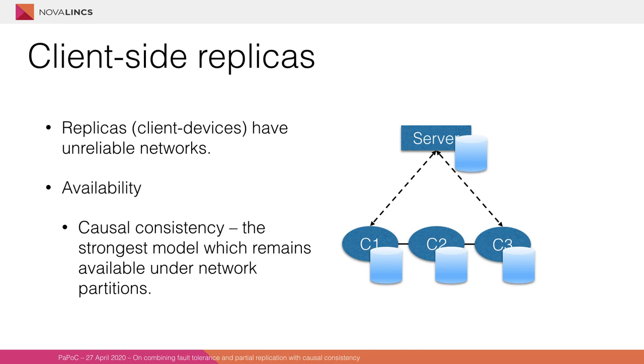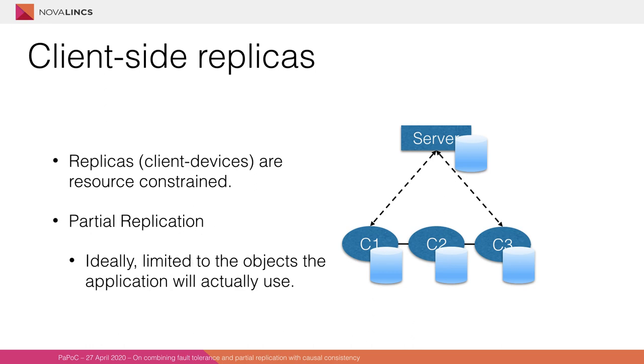One thing we have to address in such a deployment is that client devices have very unreliable networks. This has an impact on a consistency model we can apply and the strongest model available under network partitions is causal consistency. Additionally, as the client devices are resource constrained, for example, they don't have the same memory and storage that a server replica could have, clients do need to limit the objects that they actually have locally, so we need some form of partial replication.